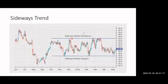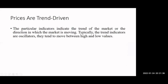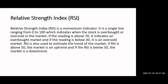A question has been texted in the chat box: when RSI is above 50, is it overbought or oversold? It is obviously overbought. I have already mentioned this part — if the reading is above 70, it indicates an overbought market. And if the reading is below 30, it is oversold.